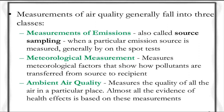Source sampling generally occurs when a particular emission source is measured, usually by an on-the-spot test. Meteorological measurement accounts for the factors that show how pollutants are transferred from source to recipient via meteorological parameters. Ambient air quality measures the quality of air at a particular place, and almost all evidence of health effects is based on these measurements.